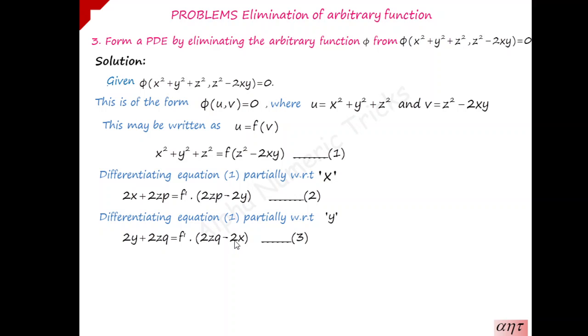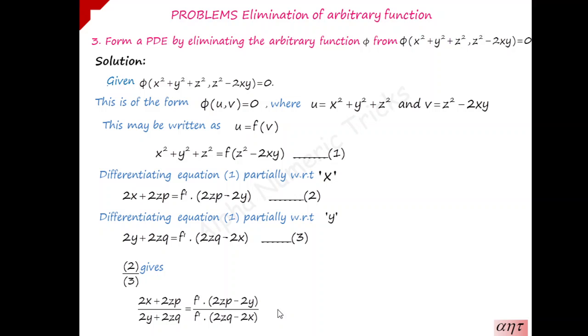Now, how will you eliminate the function? You have to divide equation 2 by equation 3, then f dash gets cancelled. Cross multiplying, dividing 2 by 3 gives: 2x plus 2zp divided by 2y plus 2zq, equal to f dash into 2zp minus 2y, divided by f dash into 2zq minus 2x. The 2s are common in numerator and denominator, and f dash cancels. So the remaining terms give: x plus zp divided by y plus zq, equal to zp minus y divided by zq minus x.